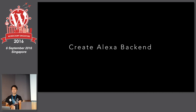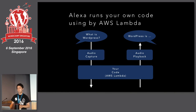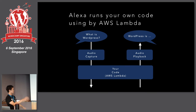Second, we need to create the Alexa backend. Alexa allows your own code to run using AWS Lambda. Alexa captures your voice, converts it to a string, and the backend runs your own code using AWS Lambda.